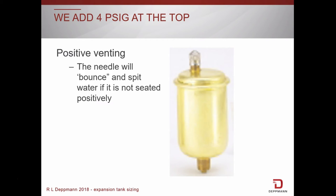Once we know the pressure due to the height of the building, our rule of thumb is to add 4 psig to that number. Why do we do that?